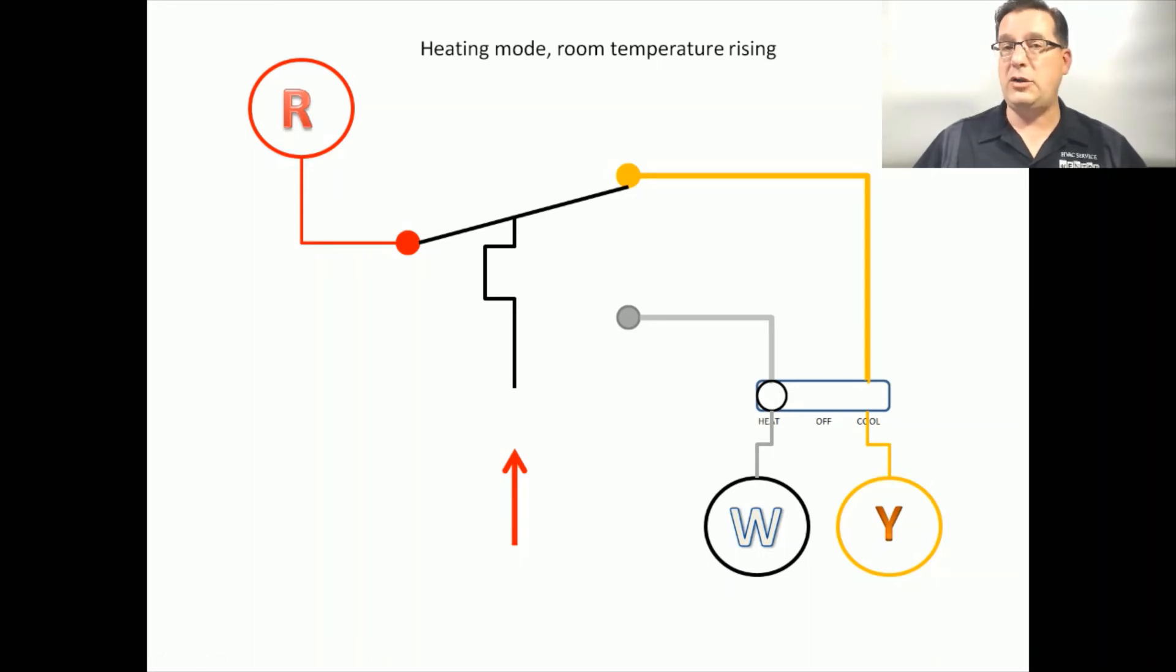There are some thermostats that also have an automatic changeover mode. In this case, there will be a dead band where, in between the call for heat and the call for cooling, there will be a midpoint where nothing will happen. Typically, the dead band between heating and cooling is about two degrees. This prevents the system from banging from heat to cool to heat to cool, and prevents the system from getting confused as to what mode it's supposed to be in.